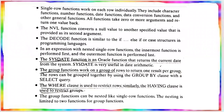To summarize: single row functions work on each row individually — including character functions, number functions, date and conversion functions, general functions like NVL, and the DECODE function. Group functions work on a group of rows to return a result. The GROUP BY clause is used to group rows, the WHERE clause restricts individual rows, and the HAVING clause restricts groups. Group functions can be nested but are limited to 2 levels. This completes the outline of Chapter 6 — built-in functions and grouping data, covered over the past three classes.